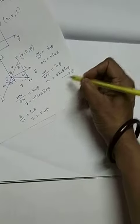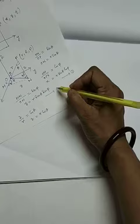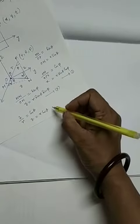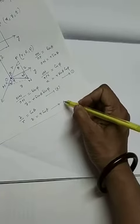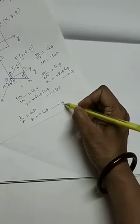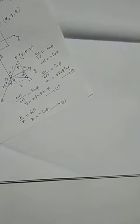So we have got three relations between the Cartesian coordinate system and spherical polar coordinates.